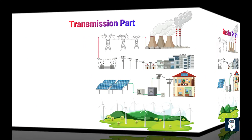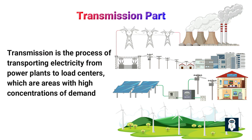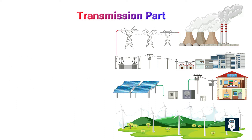Transmission is the process of transporting electricity from power plants to load centers, which are areas with high concentrations of demand. Transmission lines are high-voltage power lines that can carry large amounts of electricity over long distances.